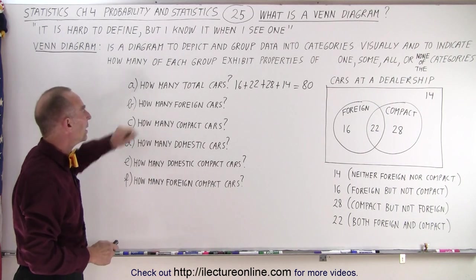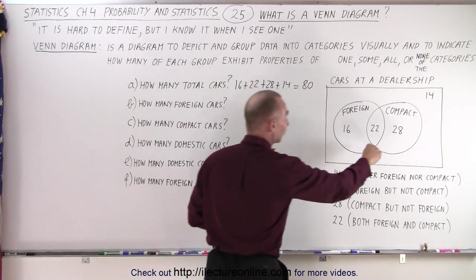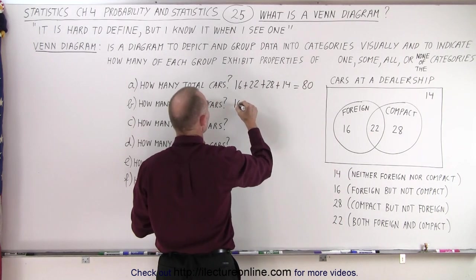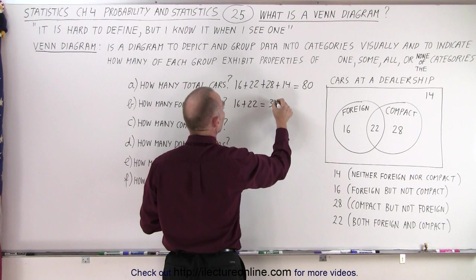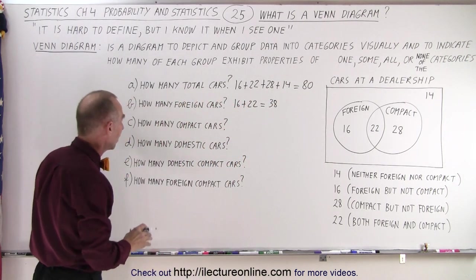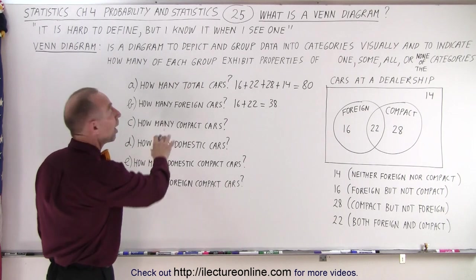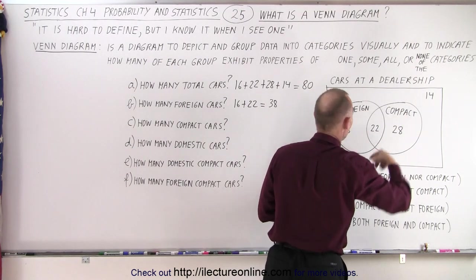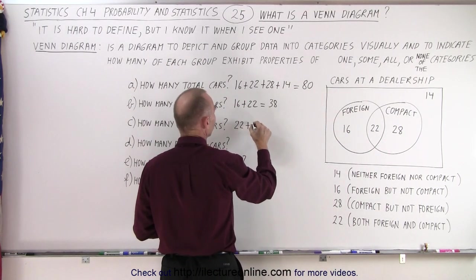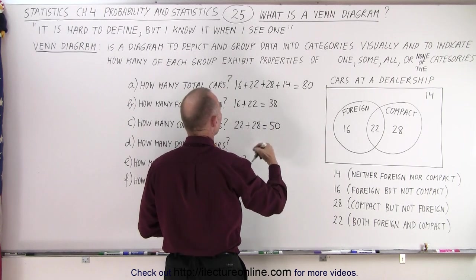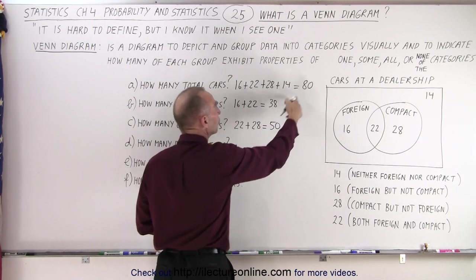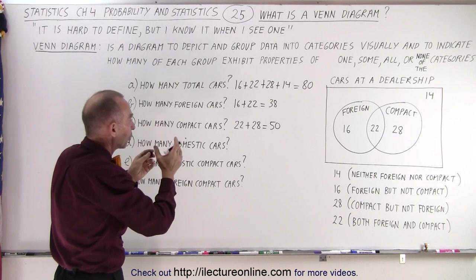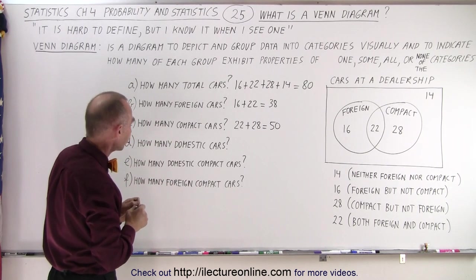Of those 80 cars, how many are foreign cars? Anything that fits into the foreign circle is a foreign car, so that's 16 plus 22, which equals 38 foreign cars. How many compact cars? Anything that fits in the compact circle is a compact car, so it would be 22 plus 28, which equals 50. Notice that when you add these together that doesn't add up to the total number of cars, but it doesn't have to — we're simply looking at cars that have a particular category or feature.